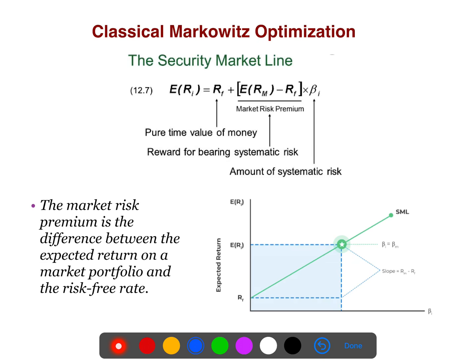As you know, this is the security market line. The expected return of any security is equal to the risk-free return plus the market risk premium. When beta equals one — that is, the beta equals the beta of the market — it shows the slope of this line, which is very intuitive.